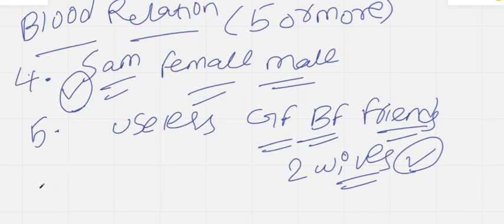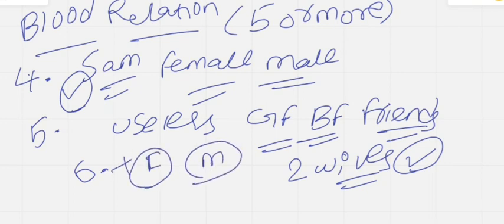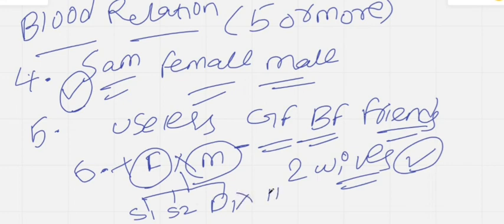The sixth and last point is: draw your own family tree. We all have our own families, so for example — father is male (plus), mother is female (minus), they are married (cross mark). They have two sons and one daughter. The daughter has a husband, and they have two children. Siblings are denoted with equal-to. Drawing your own family makes it very easy to attempt blood relations questions.